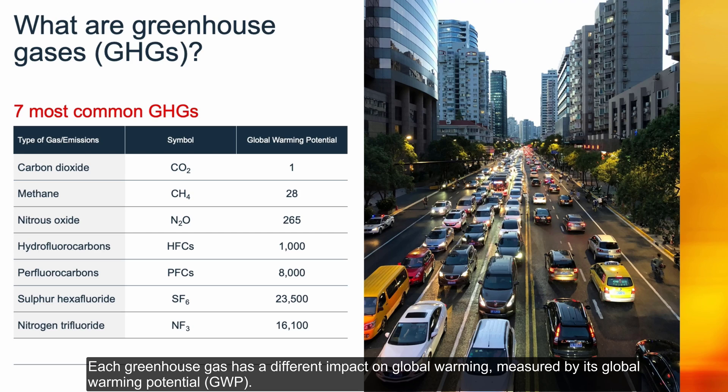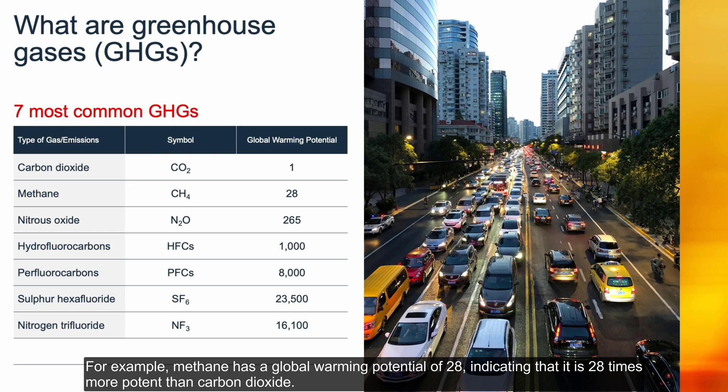Each greenhouse gas has a different impact on global warming, measured by its Global Warming Potential, or GWP. For example, methane has a global warming potential of 28, indicating that it is 28 times more potent than carbon dioxide.